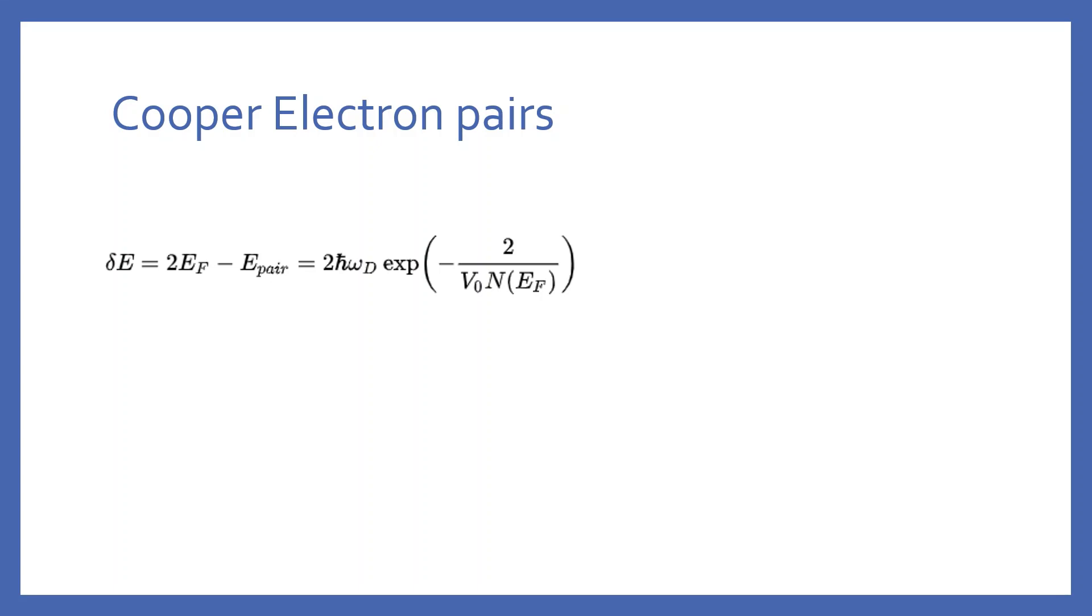Two electrons in a Cooper pair always have energy near the Fermi level when it is below the critical temperature. And this is the difference in energy. The formula was for an electron pair, so the energy gap for one electron is here. This energy gap makes the superconductivity.